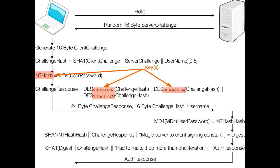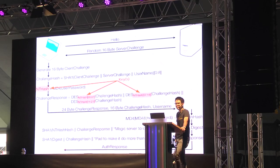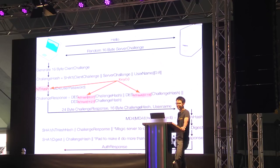Whereas by attacking the DES operations to crack the NT hash, we're looking at on the order of around 2^56 to 2^57 operations. It wasn't until recently that this sort of attack was actually feasible to perform on DES.